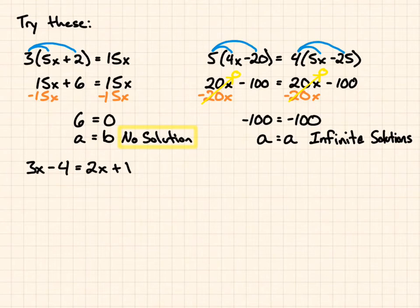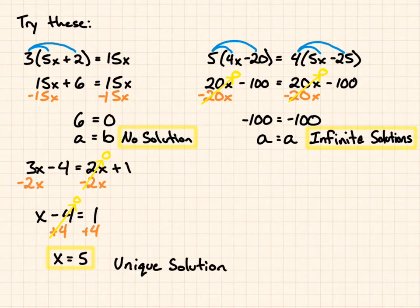Now, our third one, so we start to solve, we try to get our variables to one side. Our lowest coefficient is 2x. I'm going to subtract 2x from both sides. I'm going to end up with x minus 4 equals 1. Add 4. End up with x equals 5. This is a unique solution. But you just notice how what I boxed was what x equals. These are special cases. And this unique solution, you just put the answer as x equals 5.